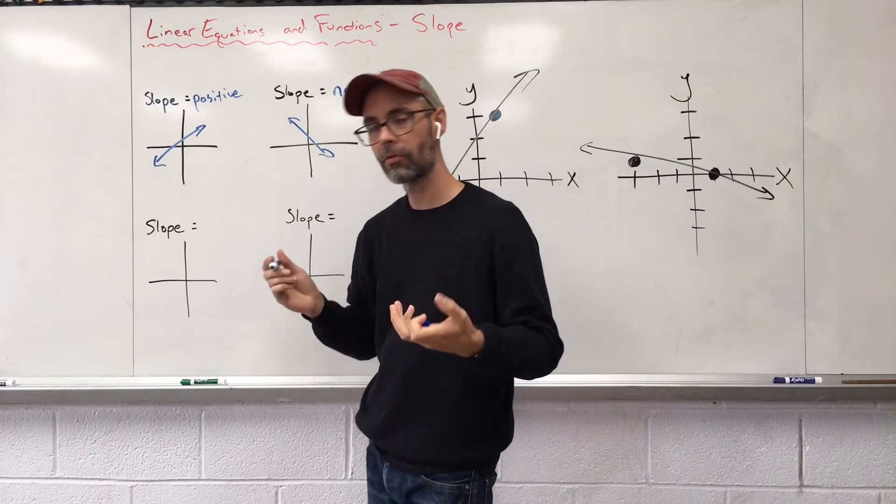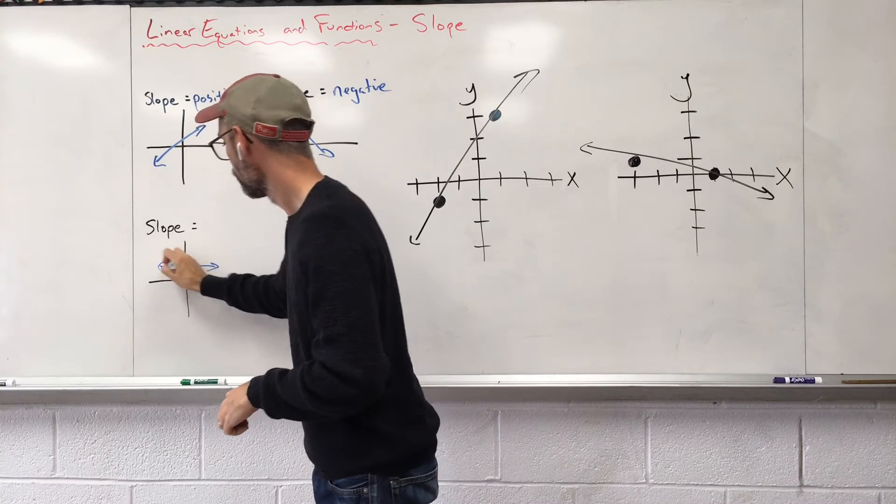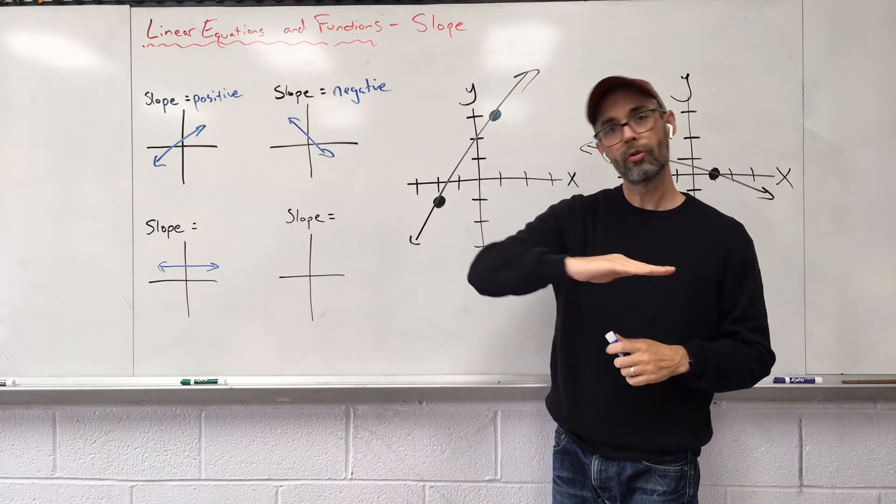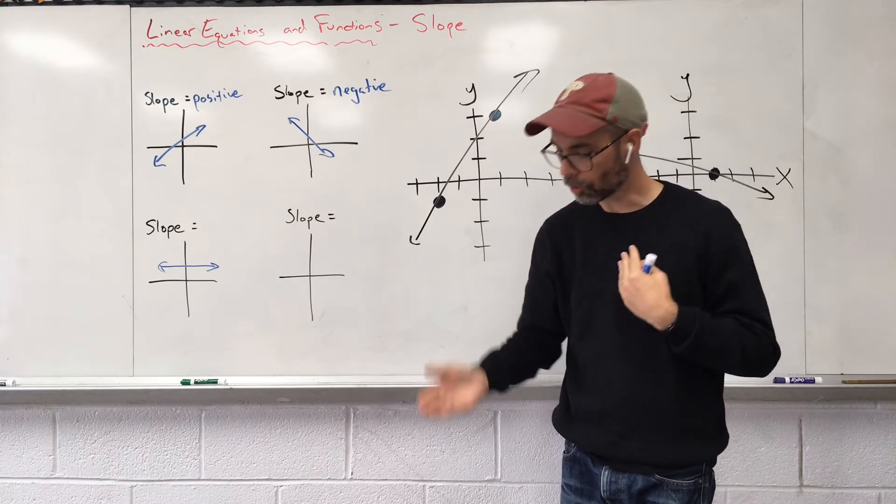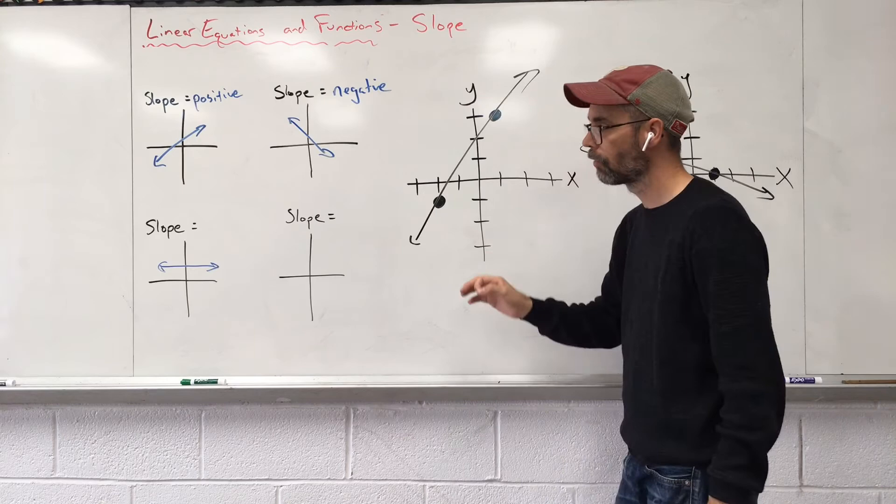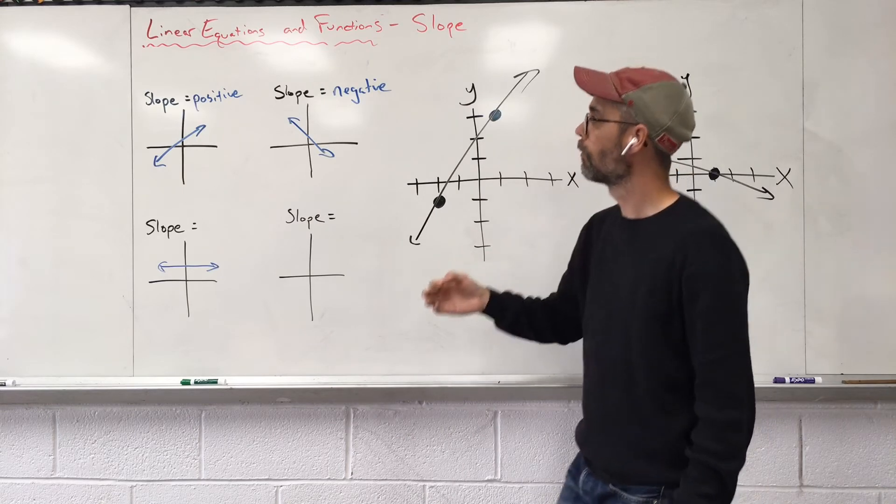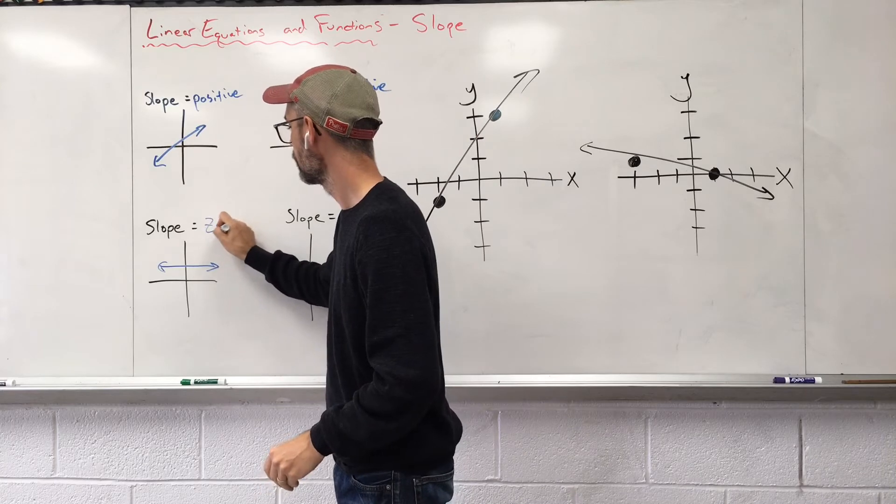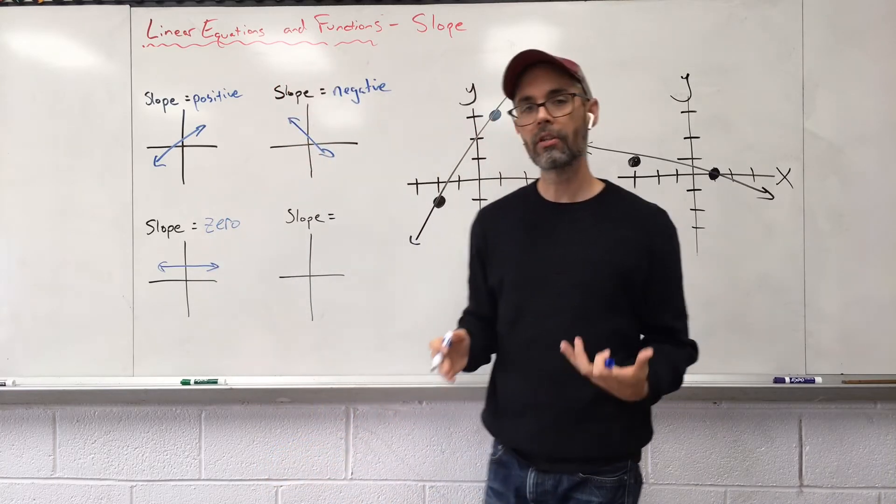If I've got a line that kind of flattened out, you're no longer walking up a hill. You're no longer walking down a hill. You're just walking on flat ground. That flat ground, we say it has a zero slope. There is no hill.